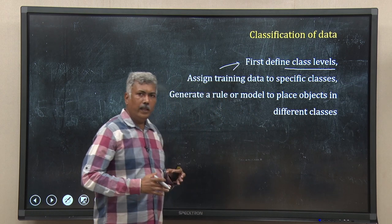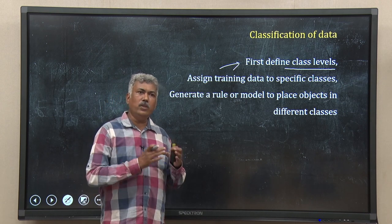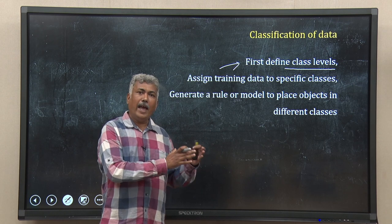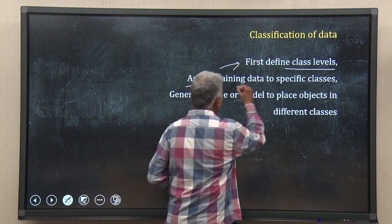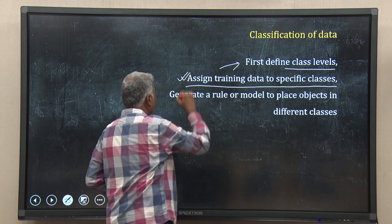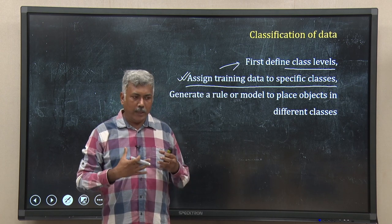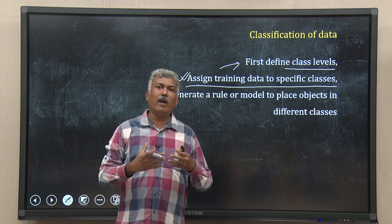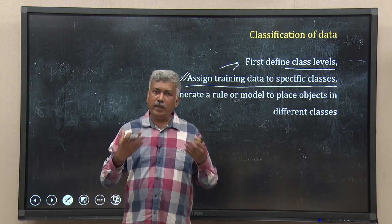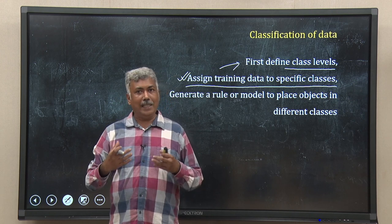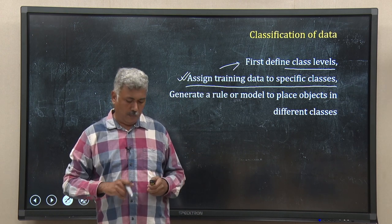We define class labels, then take a labeled training data set. For the disease/non-disease case, I know which persons in my training data set have the disease and which do not. We assign training data to specific classes, giving us labeled data sets. Using this labeled data set, we create a classifier — a mathematical model — so that model can predict the class of an unknown sample. If I create a predictive classifier model from the labeled training data, I should be able to predict whether a new person coming to my clinic has the disease or not.